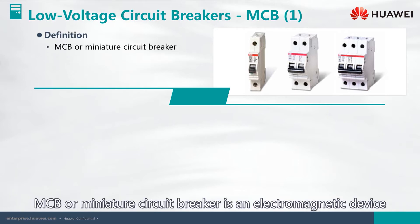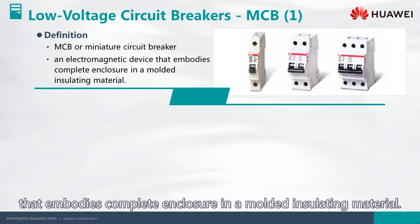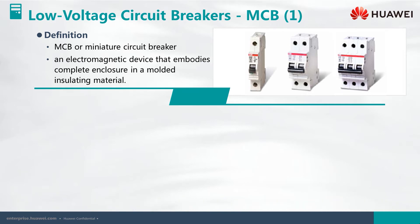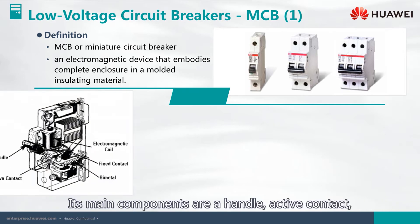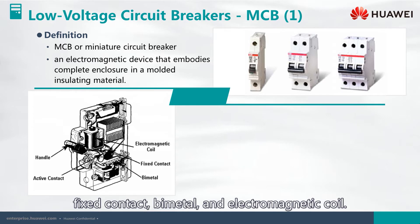MCB, or Miniature Circuit Breaker, is an electromagnetic device that embodies complete enclosure in a molded insulating material. Its main components are a handle, active contact, fixed contact, bimetal, and electromagnetic coil.